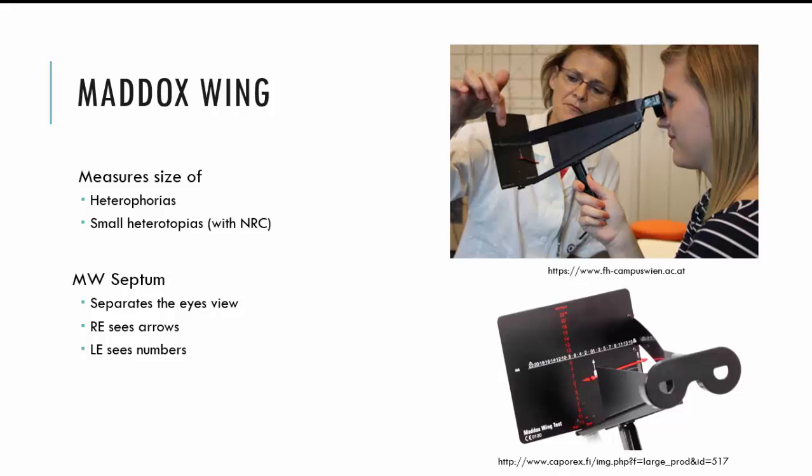The tests we've discussed so far such as the prism cover test or Krimski or tests that utilize prisms in general cannot measure torsion. They're only able to give us the measurement of the vertical and or horizontal deviation but no information around torsion. Whilst the Maddox wing can do all three: horizontal, vertical, and torsion.